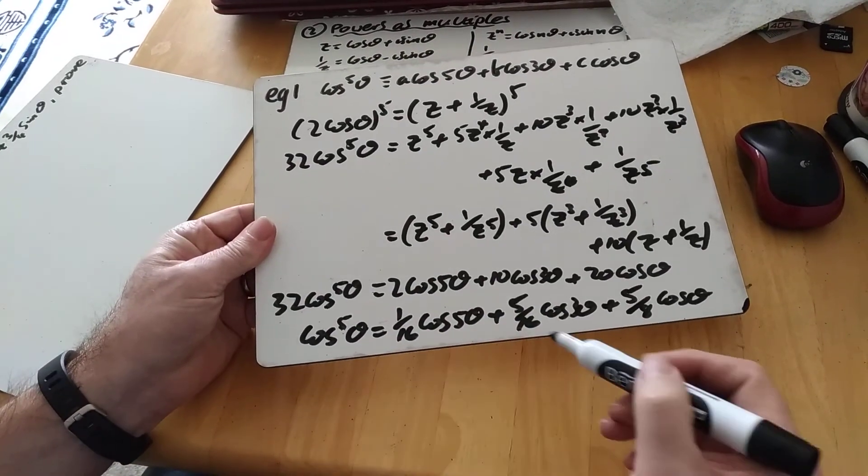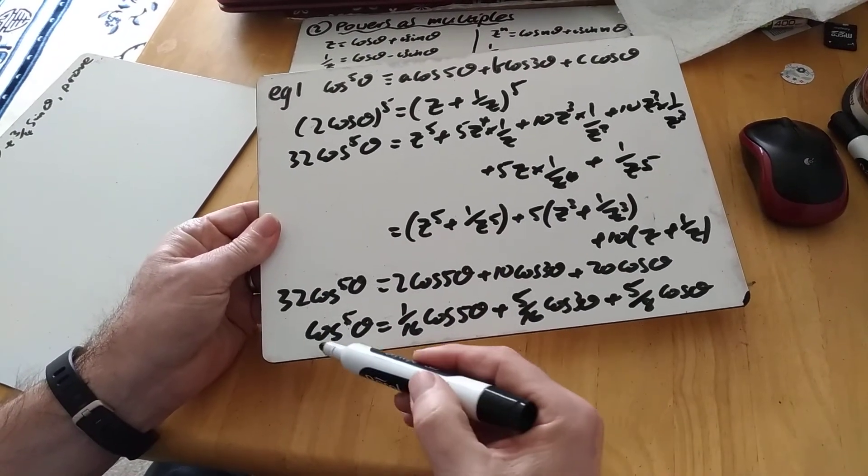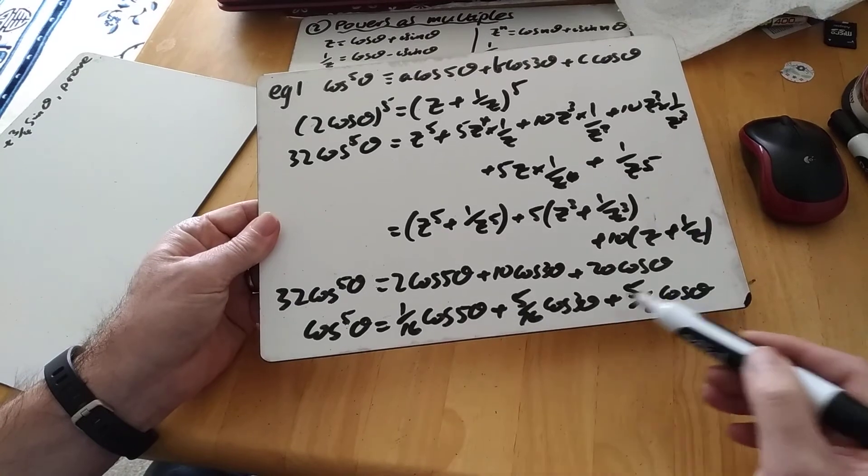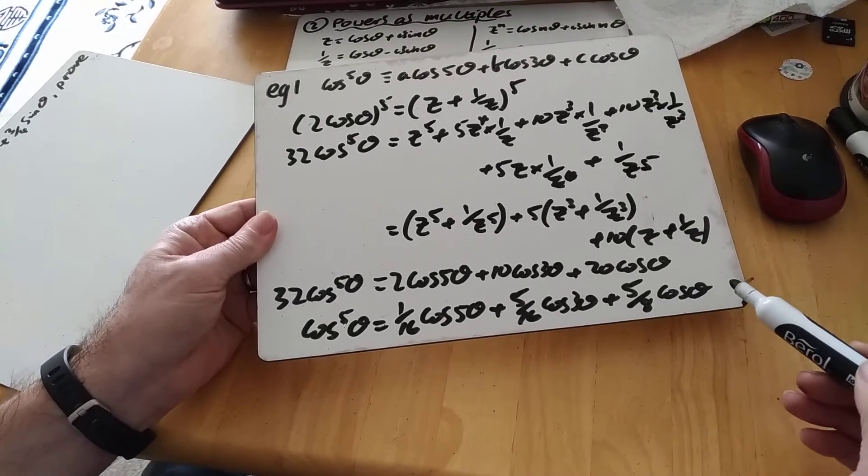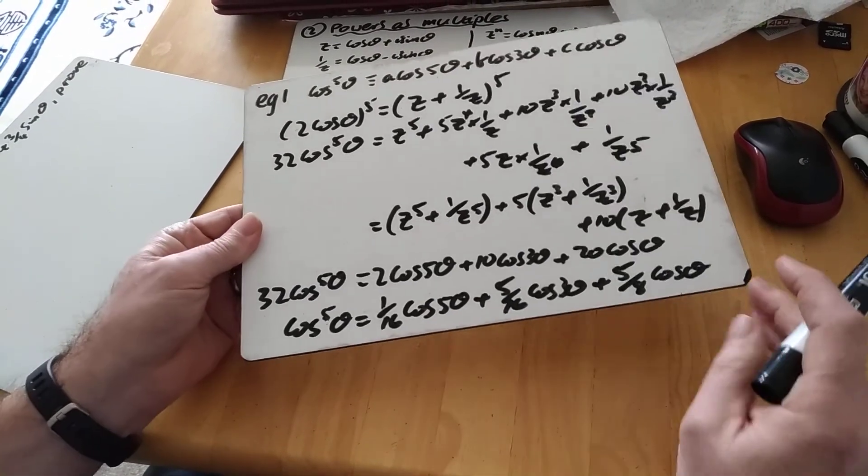And in that case there, we can now, or later on in the course anyway, integrate cos to the power of 5 theta. We can rewrite it as these things and integrate those term by term. So that's the first example there.